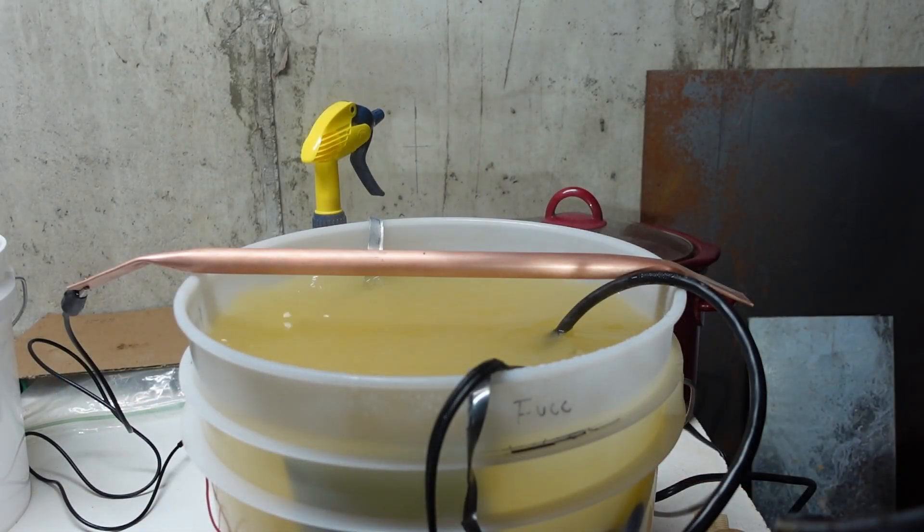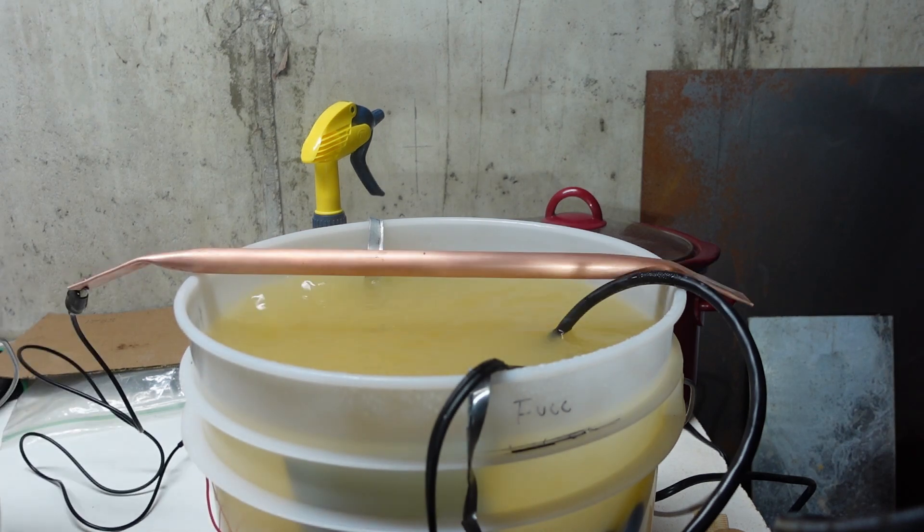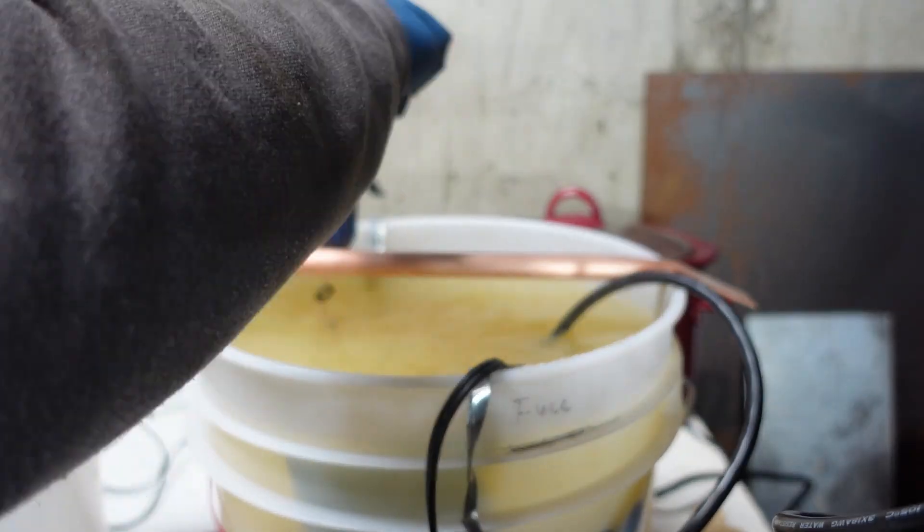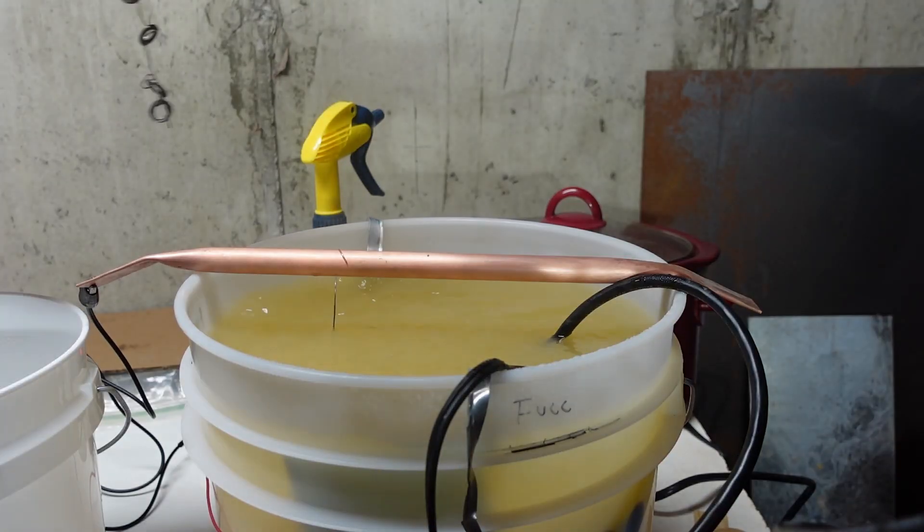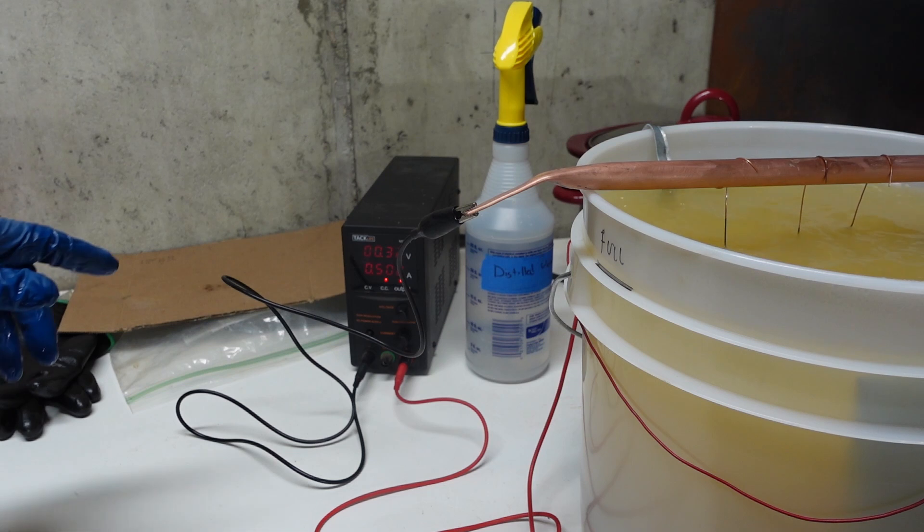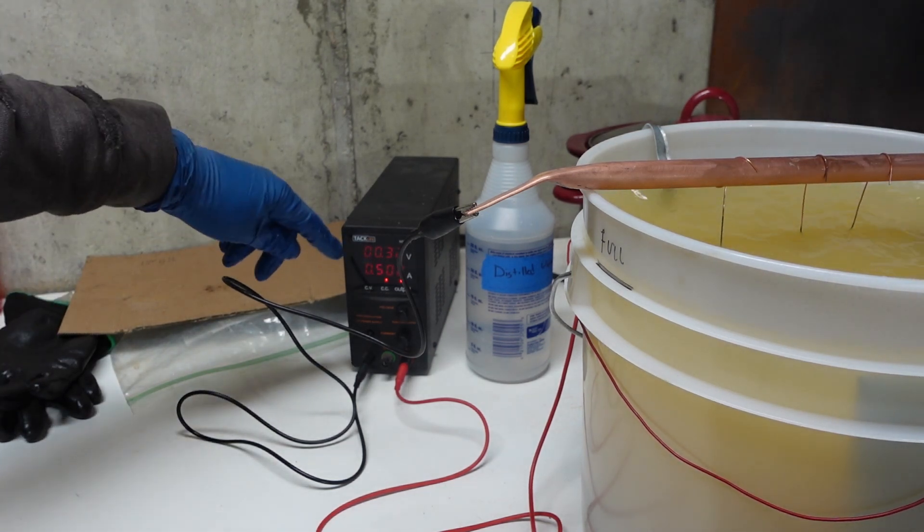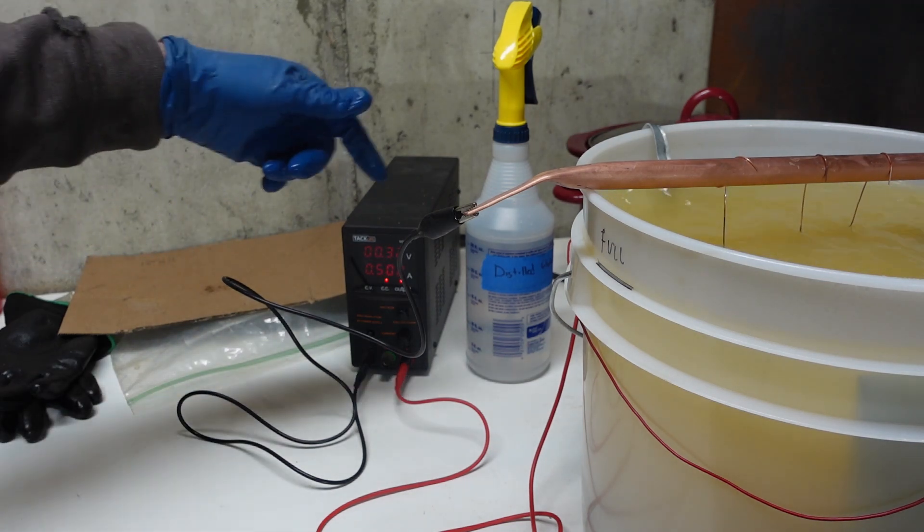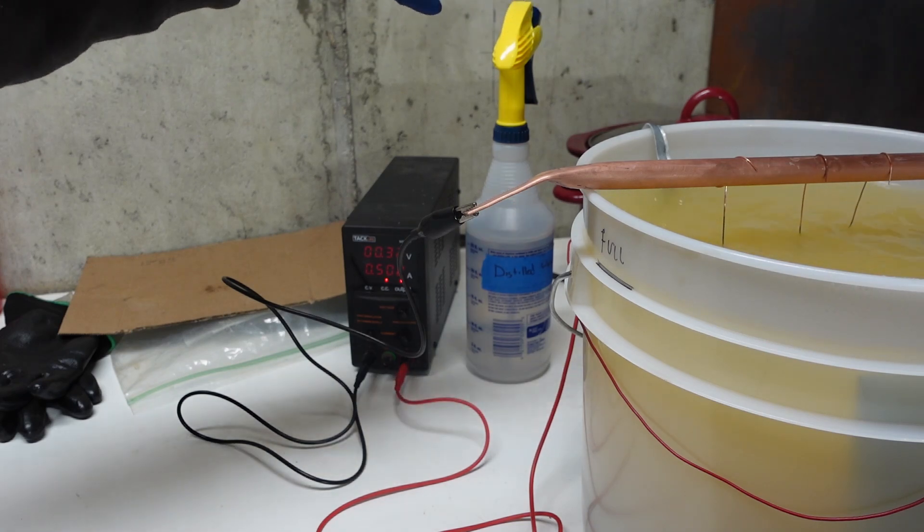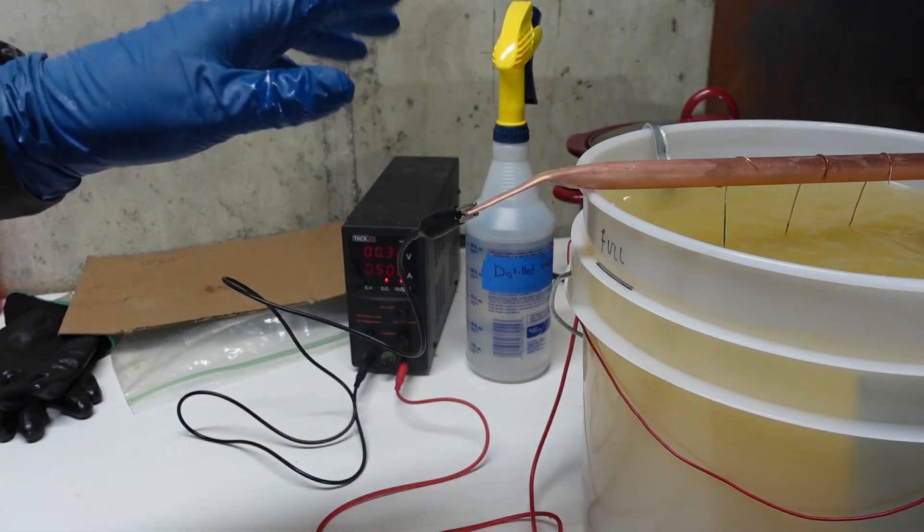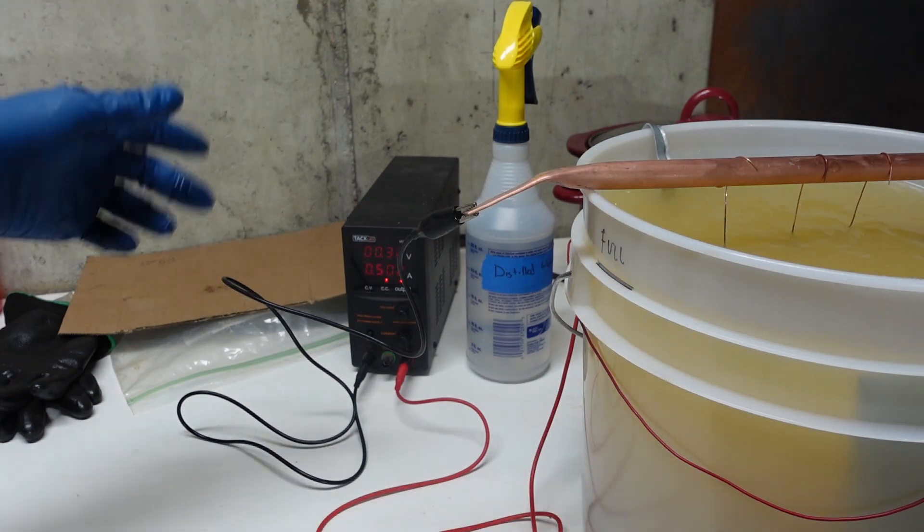Got the washers cleaned and etched here. So now we're going to go ahead and hang them in the plating solution. This is about a 20 minute evolution here. So the plating process should be going. Notice the power supply here. It's only about 0.32 volts, but it's about a half an amp.